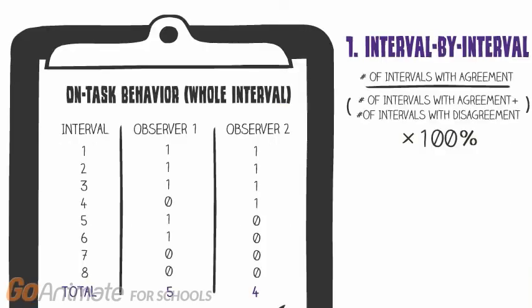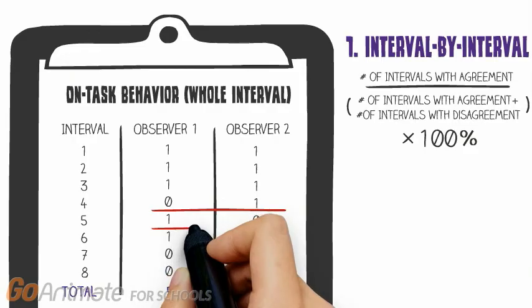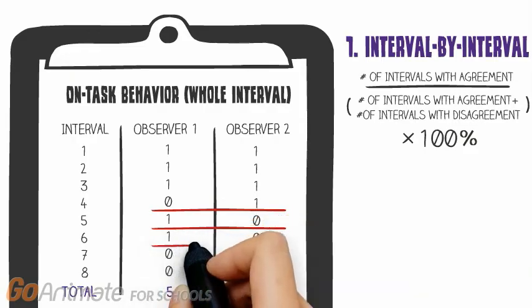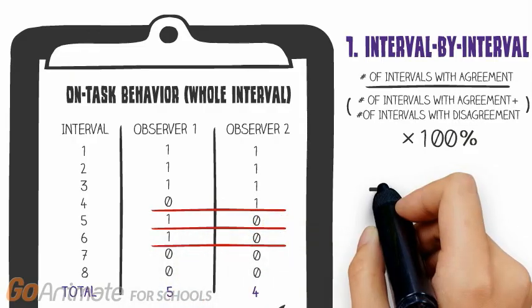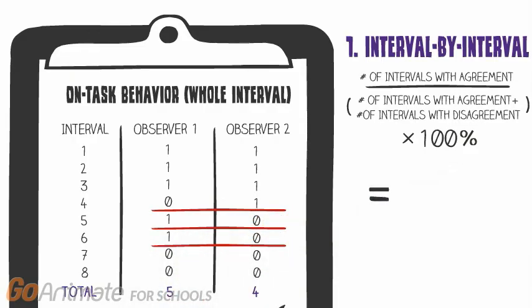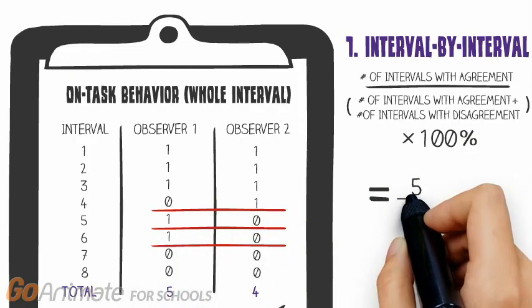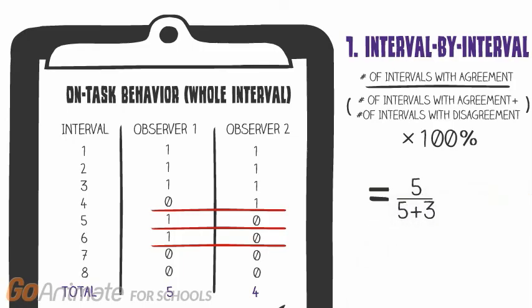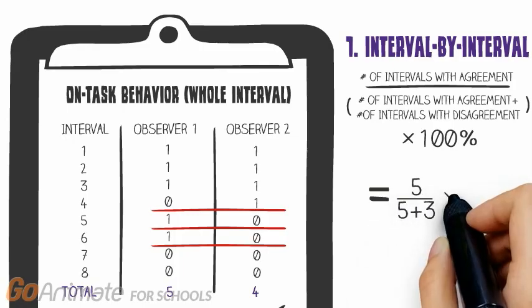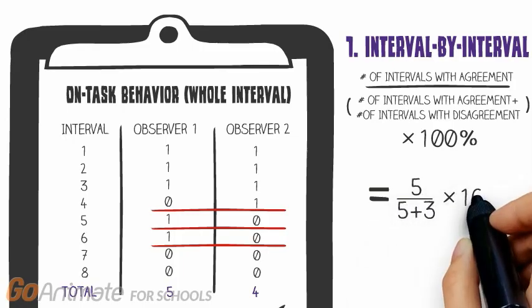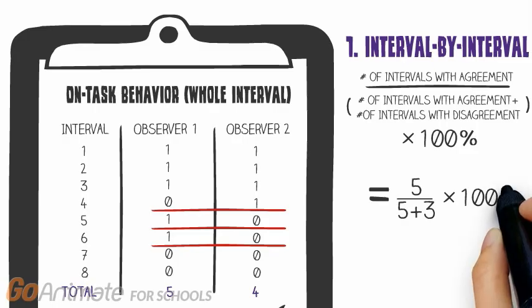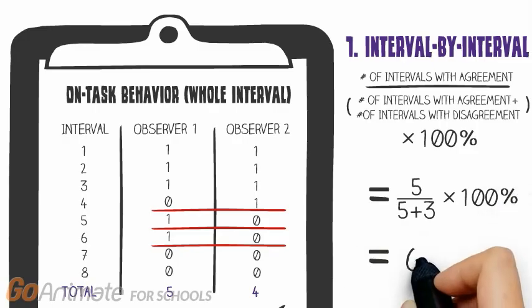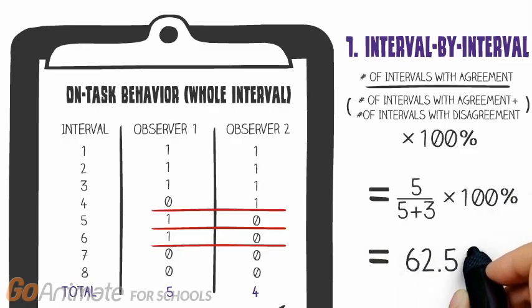In our sample data, the observers disagree on intervals 4, 5, and 6. The total number of agreed upon intervals, 5, is divided by the total number of agreements plus disagreements, 8, and multiplied by 100%, resulting in an IOA of 62.5%.